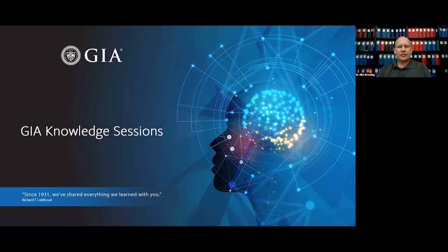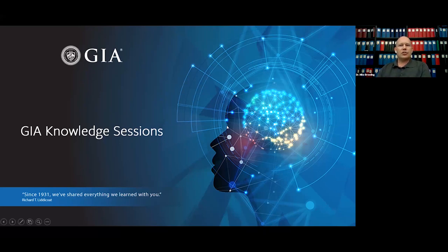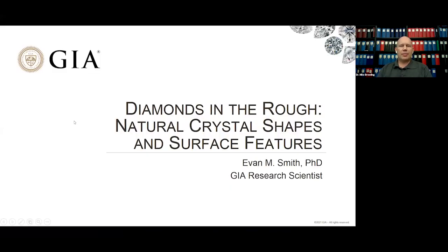I'm excited to kick things off today. Most of us look at nice sparkly faceted gemstones and are amazed, but what we don't always realize is that there's a lot to be learned from gems in their uncut form. Today I'm joined by Dr. Evan Smith, a research scientist at GIA. He's going to tell us all about rough diamonds and specifically about their natural crystal surfaces and the shapes they occur in.